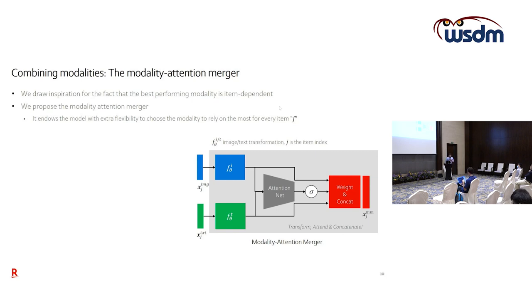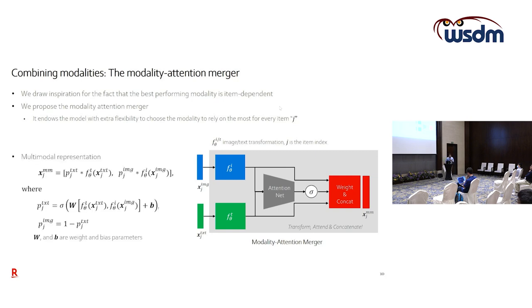The architecture takes as input the image and text representations, pushes them into an attention network that predicts the probability that the image or text is more relevant — for example to predict color for a given item. The key point is that once you obtain this probability of relevance for text and image, you reweight the corresponding representations before concatenating them. In the extreme case where only the image is relevant, the model assigns a weight close to 1 for image and close to 0 for text.